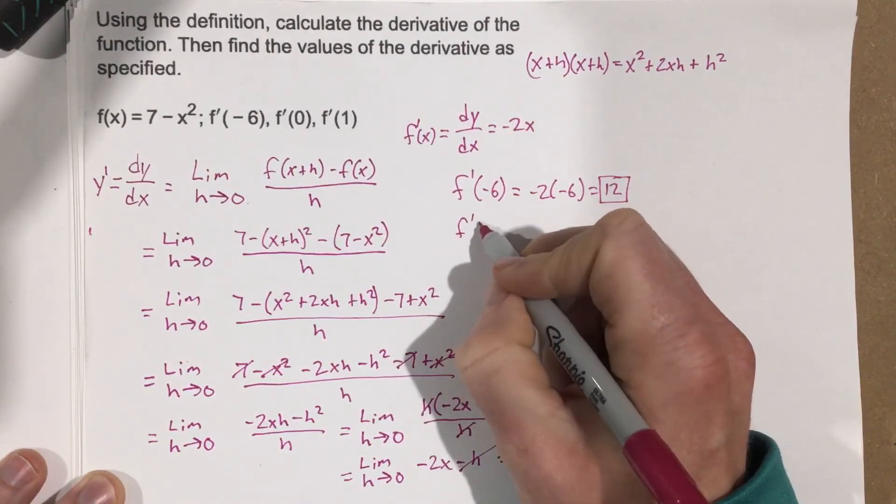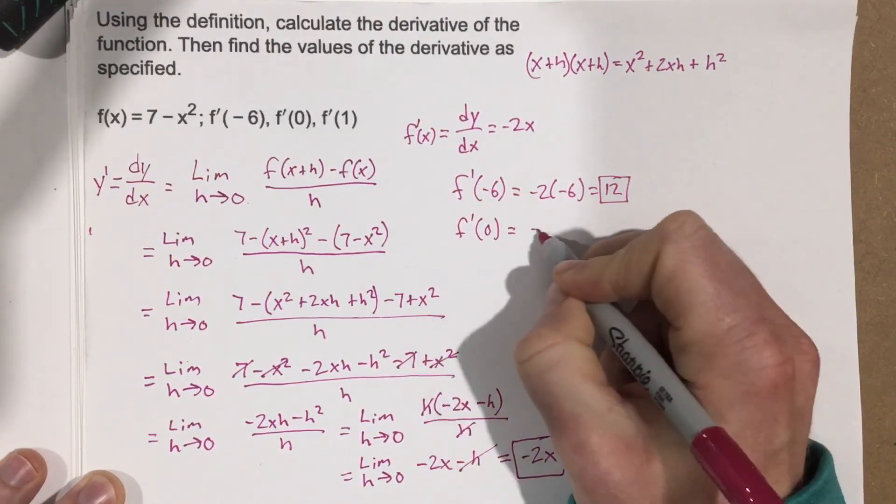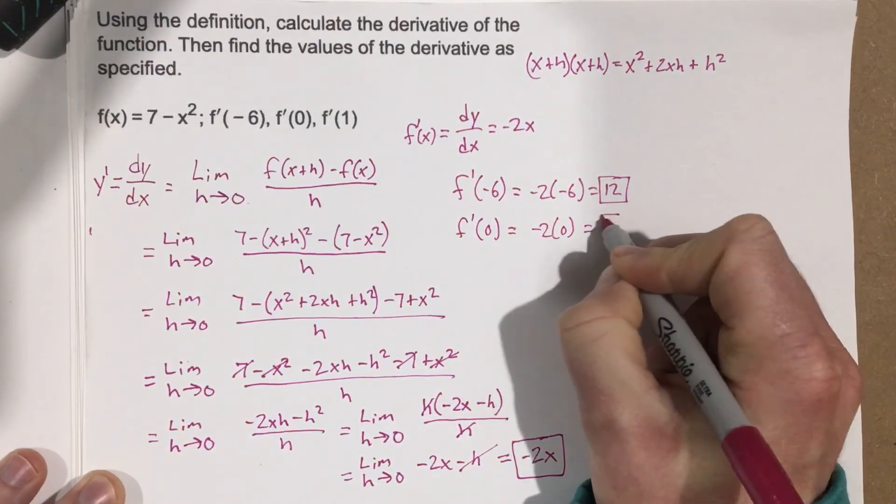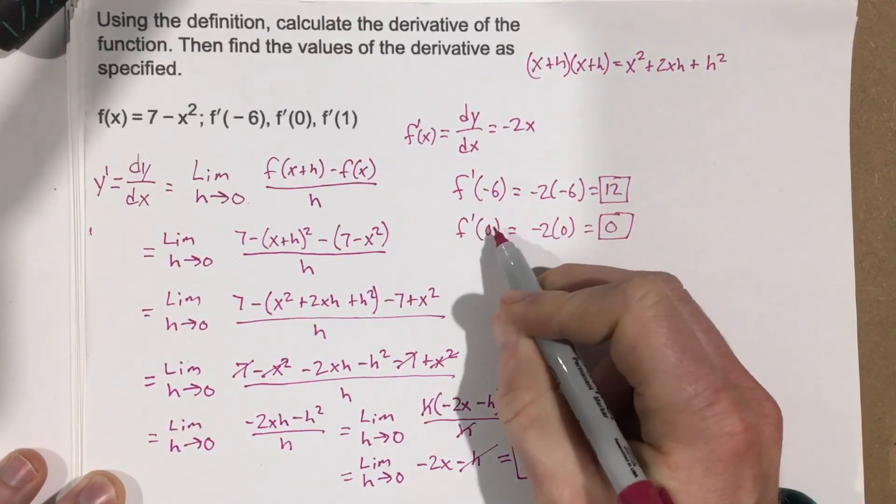Let's do f prime of 0. Negative 2 times 0 is 0. So, the slope is 0 at x equals 0.